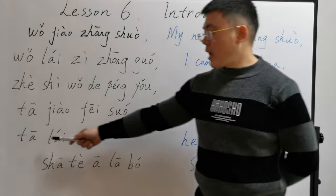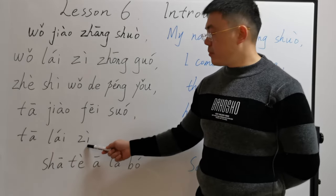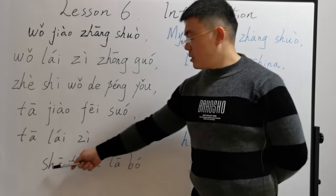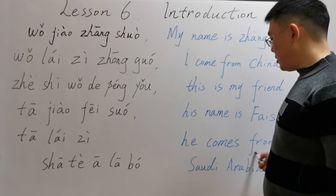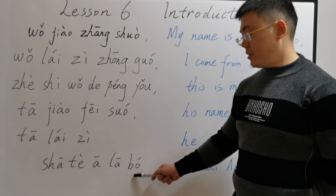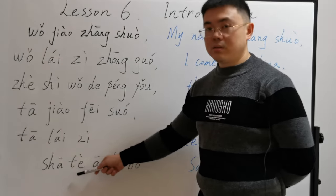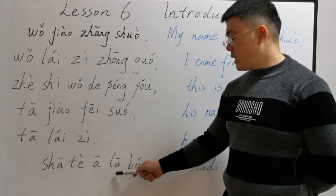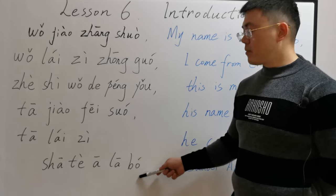他来自 — 他 means he or him, 来自 means come from. 他来自沙特阿拉伯. 沙特阿拉伯 means Saudi Arabia. 阿拉伯 means Arabian countries, Arabia, and 沙特 in Chinese means Saudi. So 沙特阿拉伯 is Saudi Arabia. 他来自沙特阿拉伯.